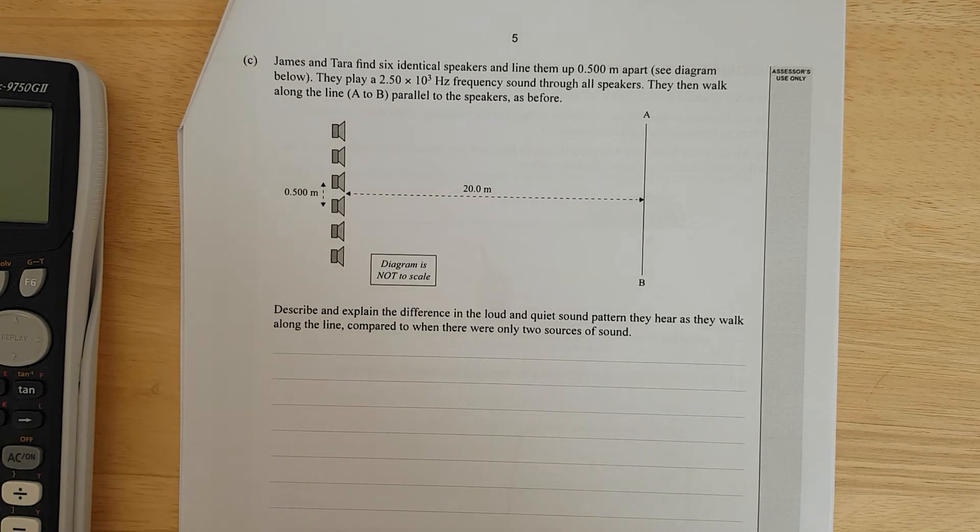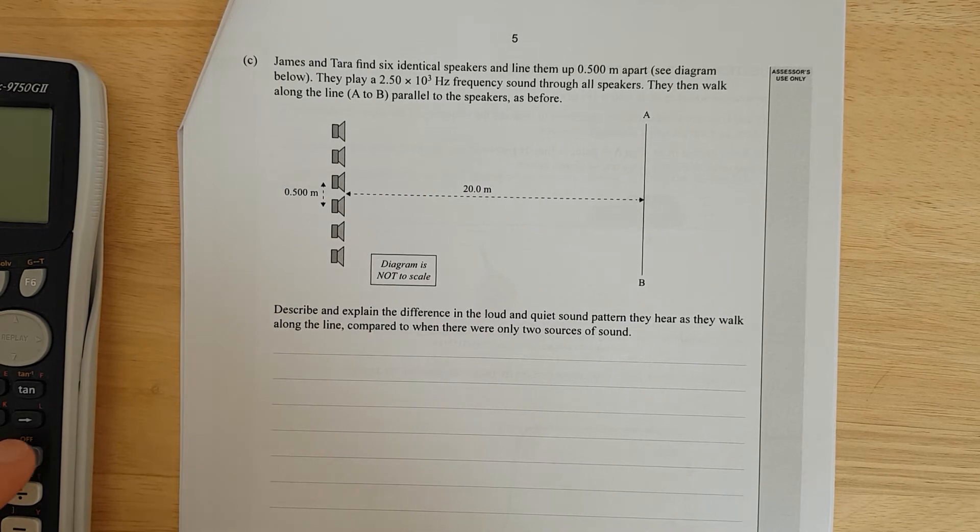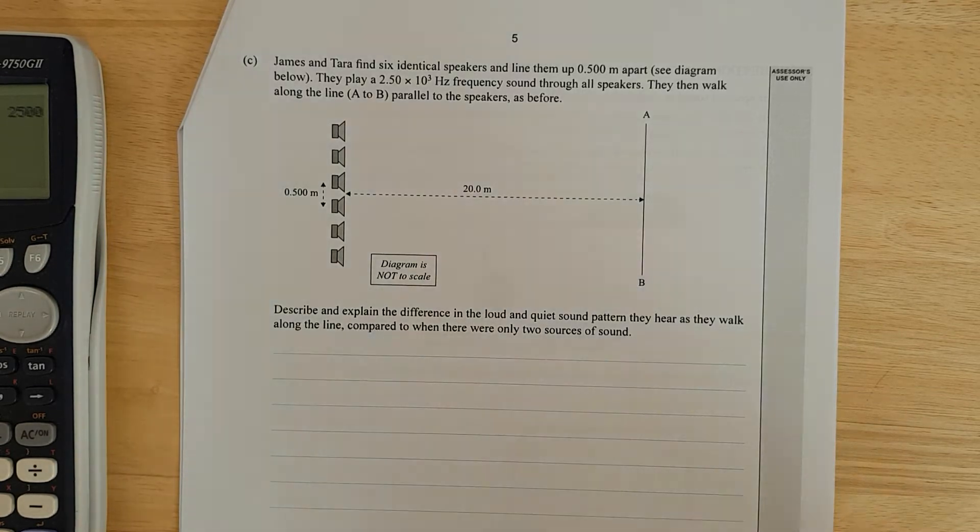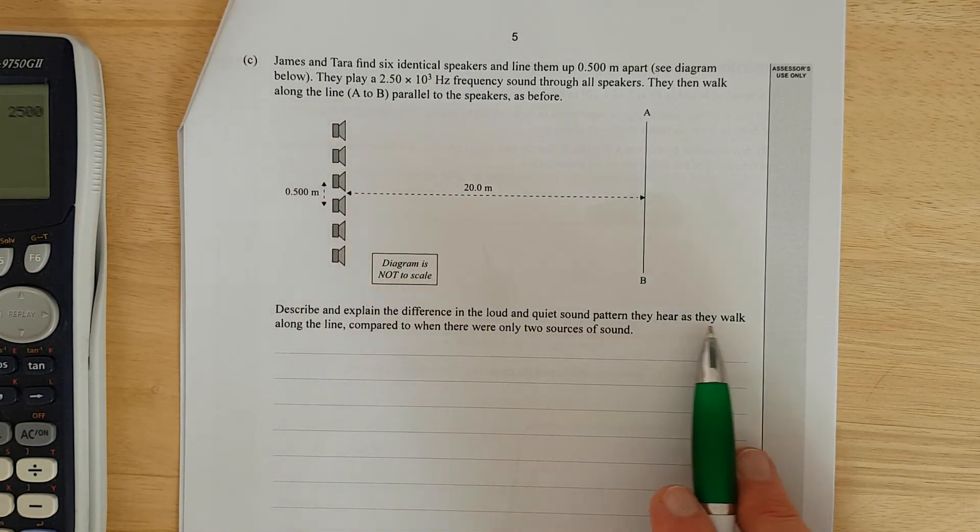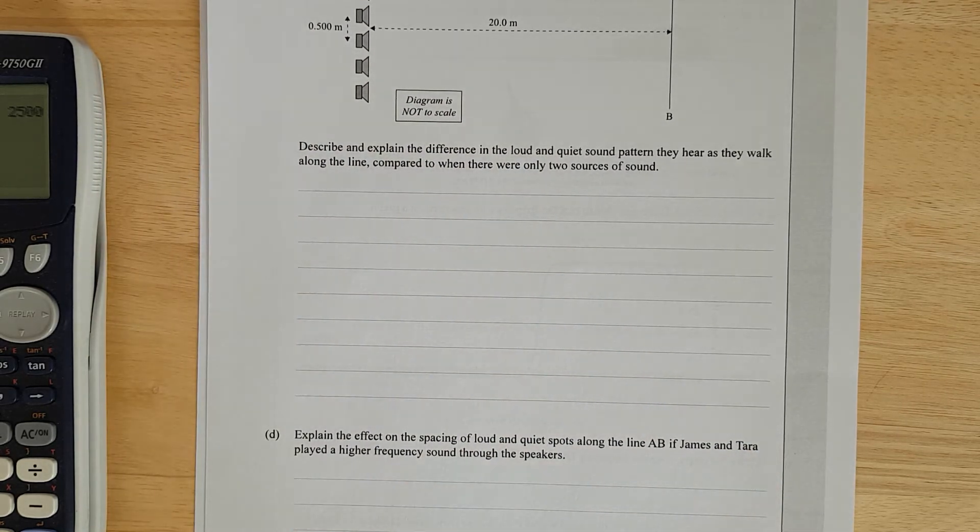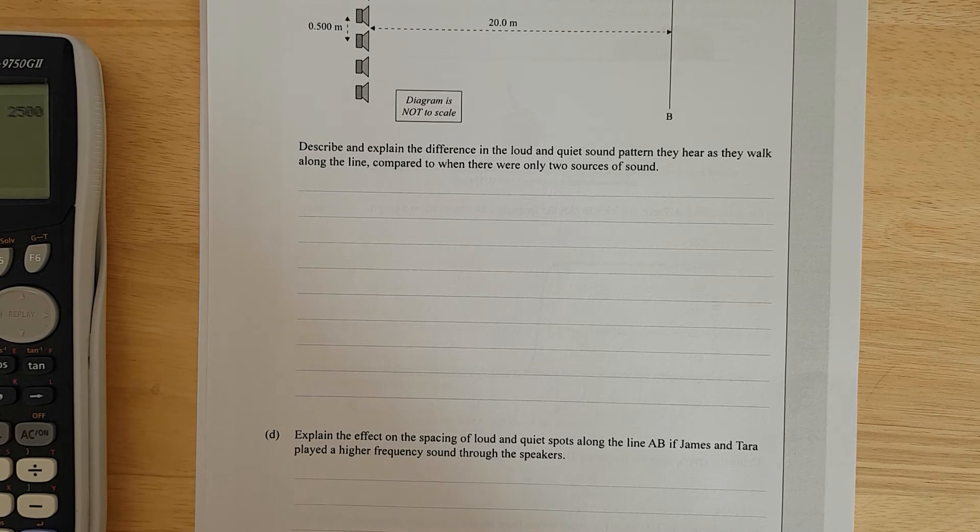James and Tara find six identical speakers and line them up half a meter apart, so they've got a diffraction grating or a pseudo-diffraction grating. They play 2.5 times 10 to the 3 hertz. Walk along AB. Describe and explain the difference in a loud and quiet sound pattern they hear as they walk along the line, compare it to when they were only two sources of sound. So this I'm pretty sure is the same as the 2018 question 1D. They use light instead of sound but it's pretty much the same thing. And I would guess that this is probably an A question. It totally is.